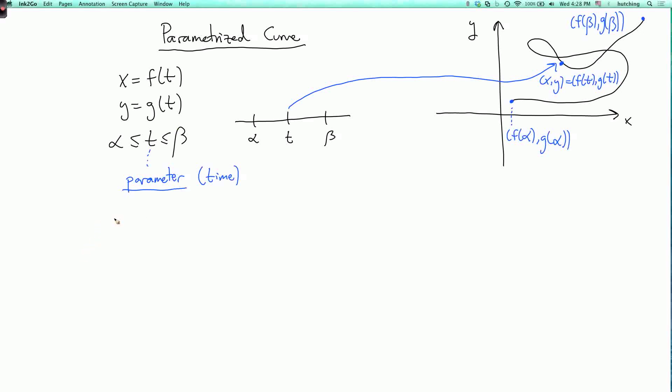Let's look at a couple of basic examples. So example one will be x equals cosine t, y equals sine t, and t goes from 0 to 2 pi. So what is this curve? Well, we know that points of the form cosine t comma sine t live on the unit circle. So we can draw the unit circle here. And at t equals 0, we're at the point 1, 0.